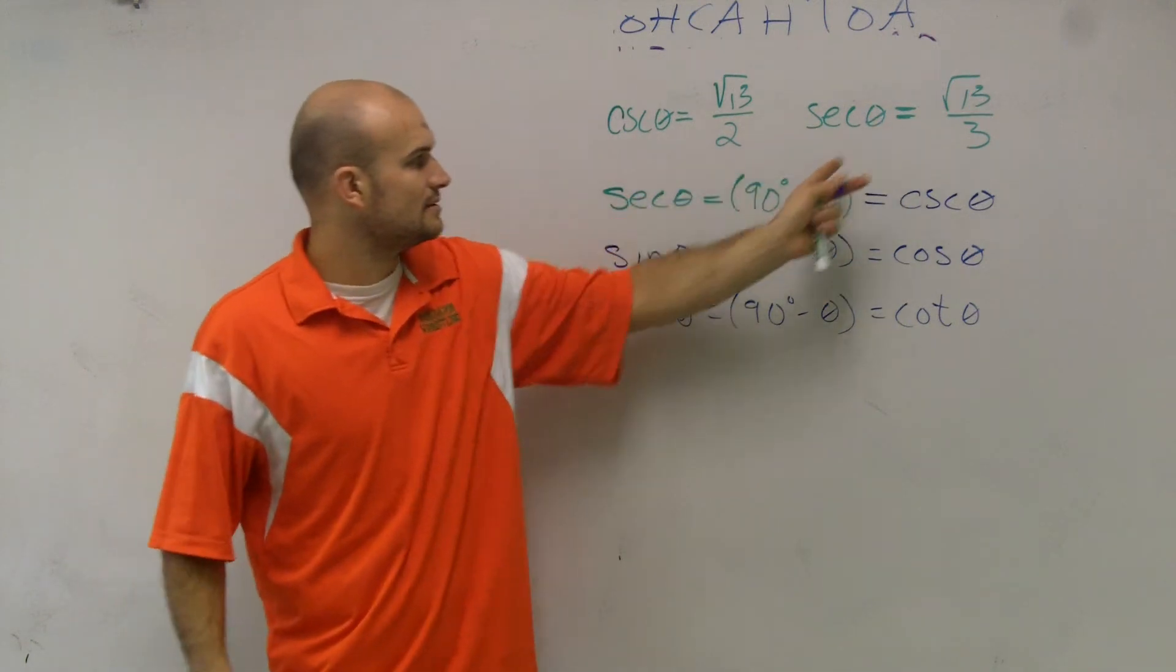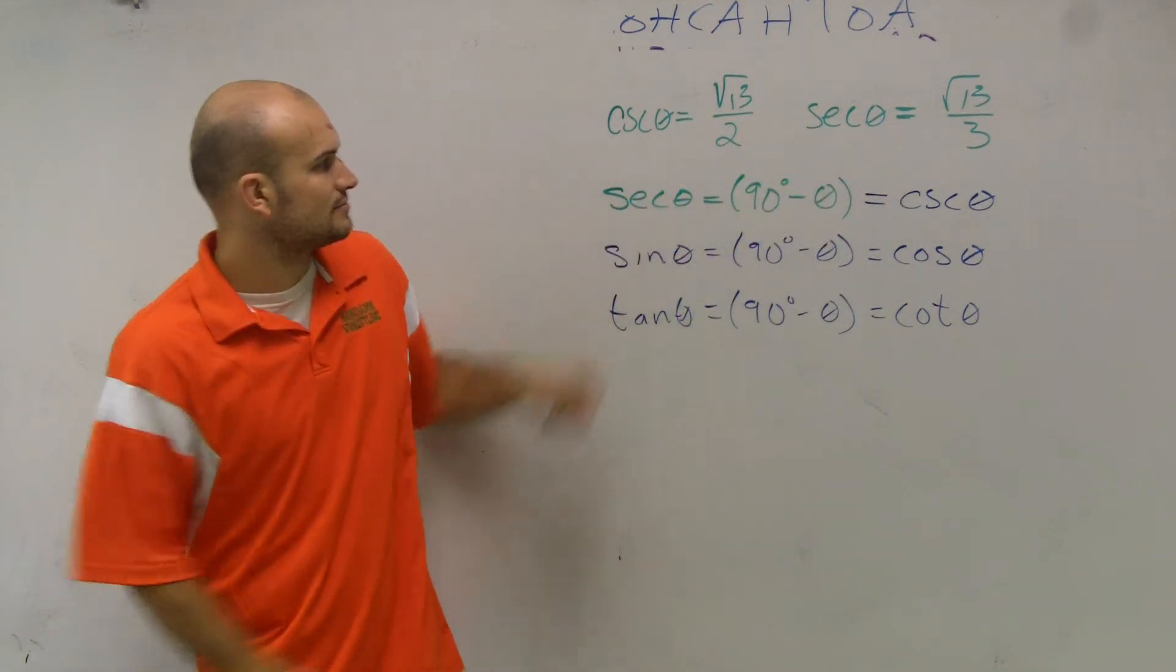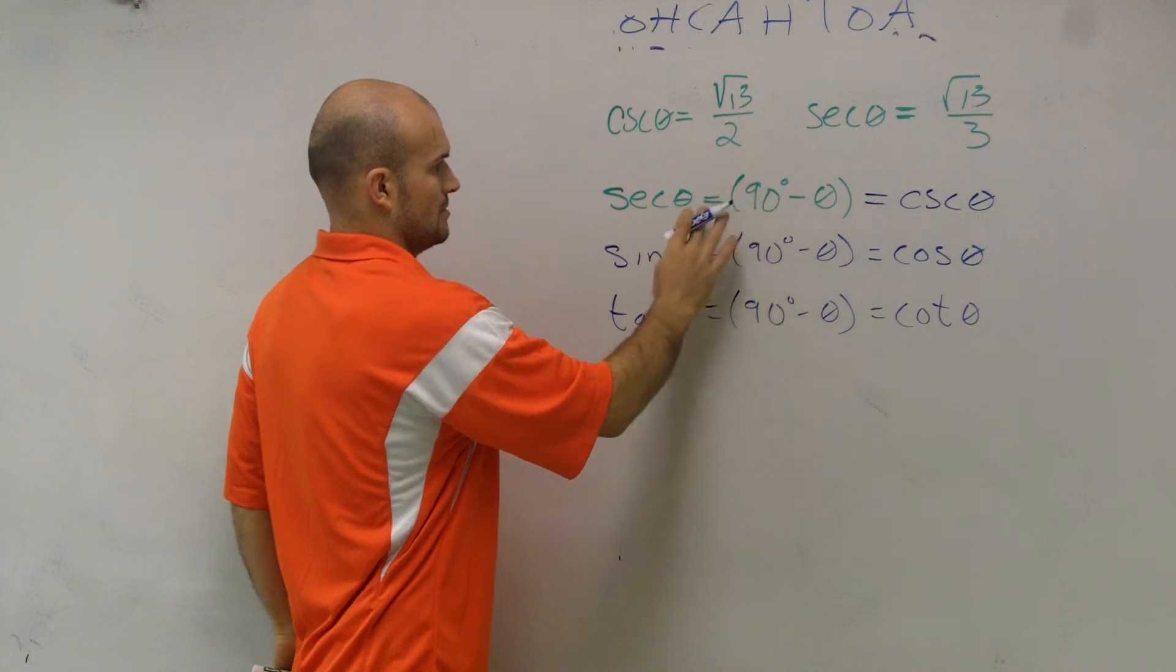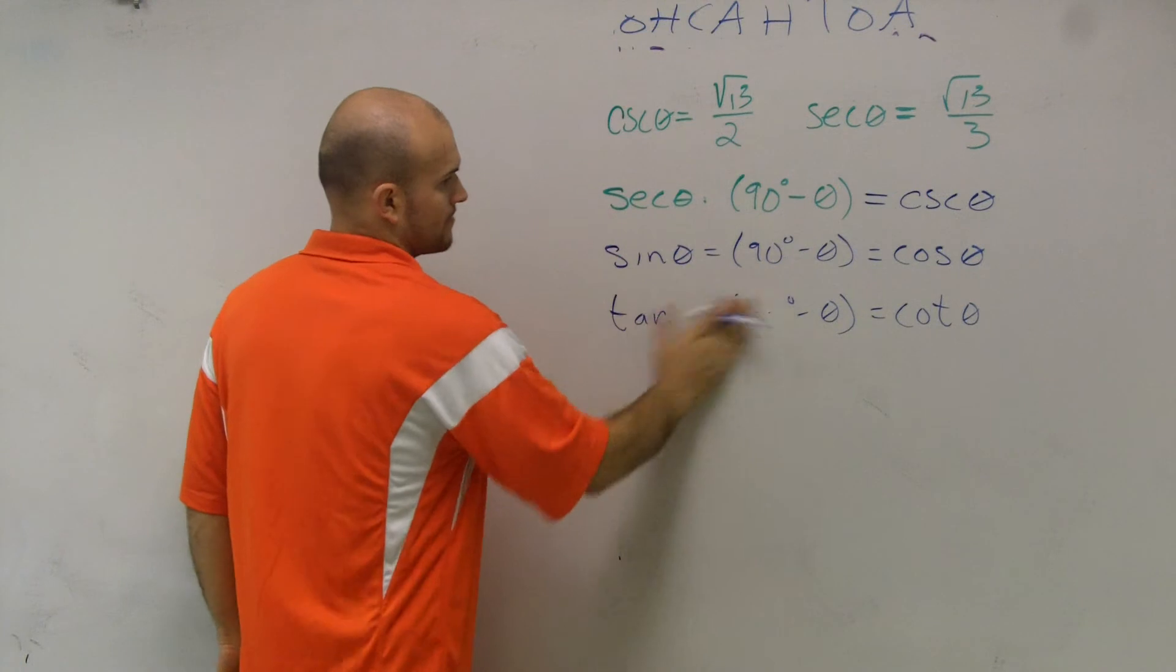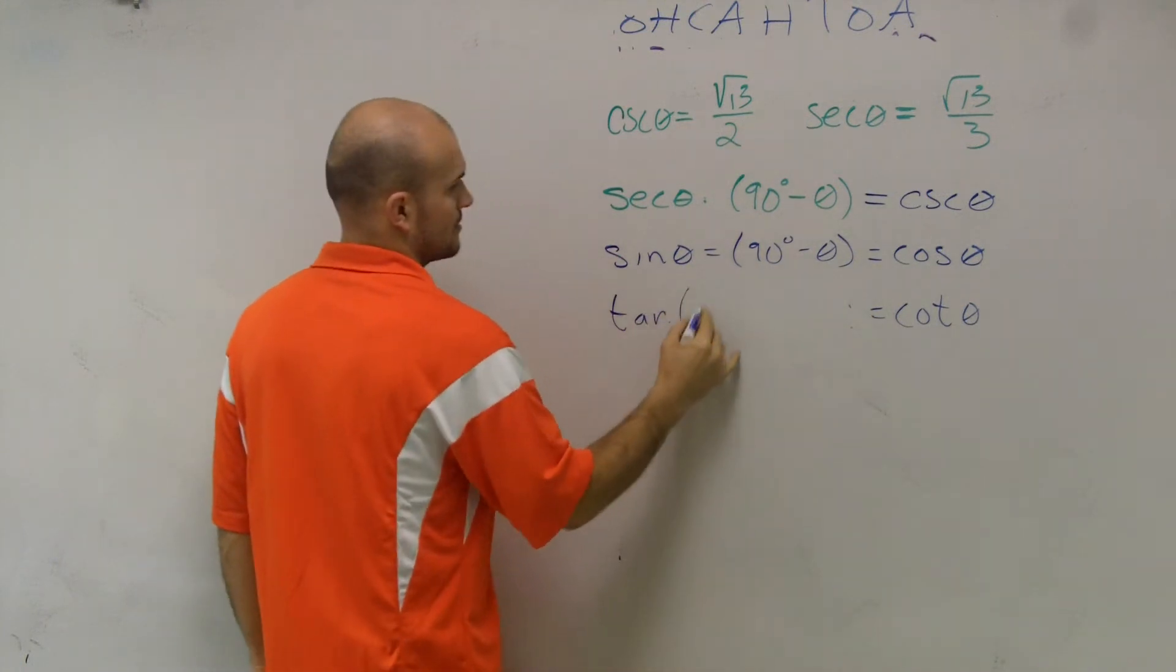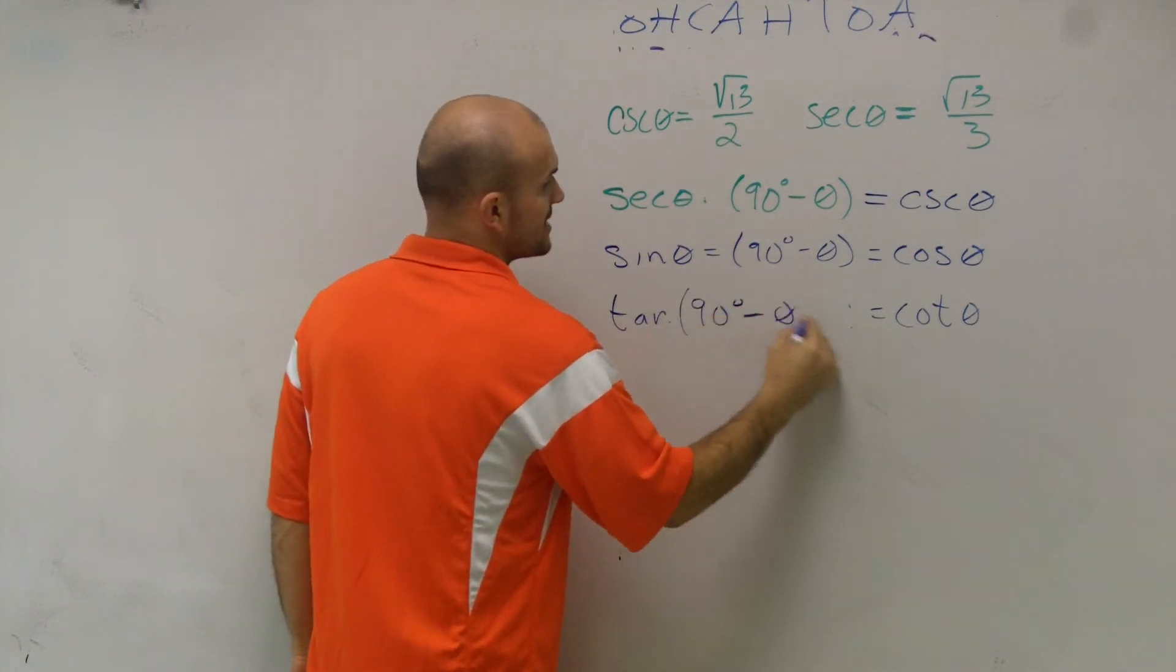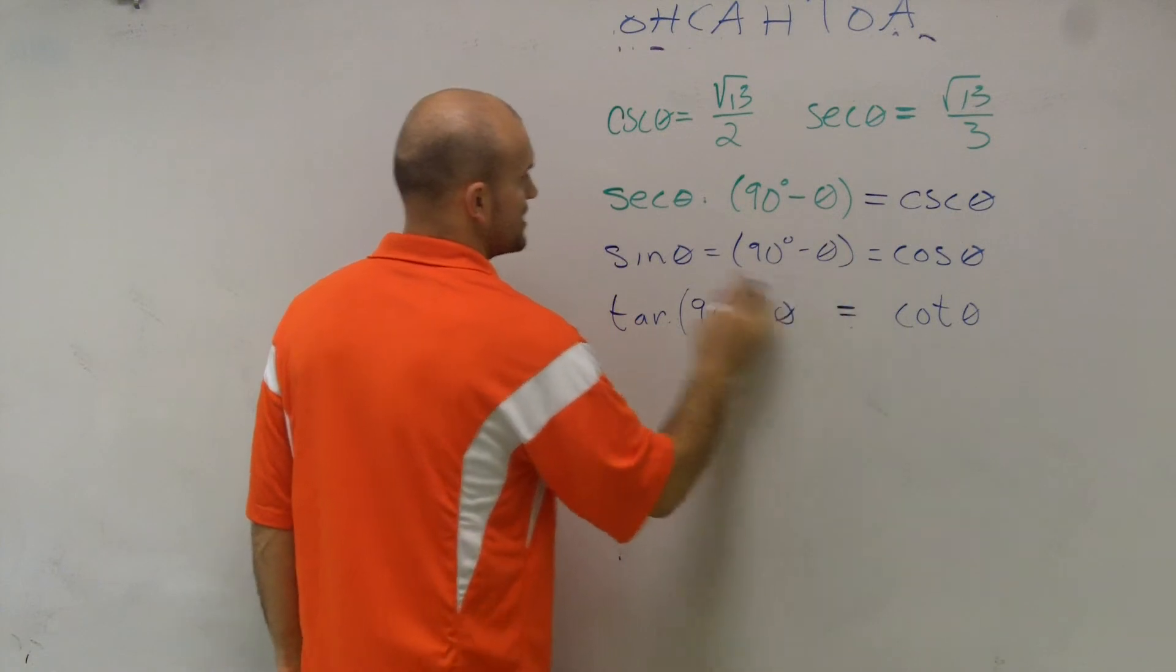I'm sorry. What did I write? That's not... 90 degrees minus theta is equal to cotangent.